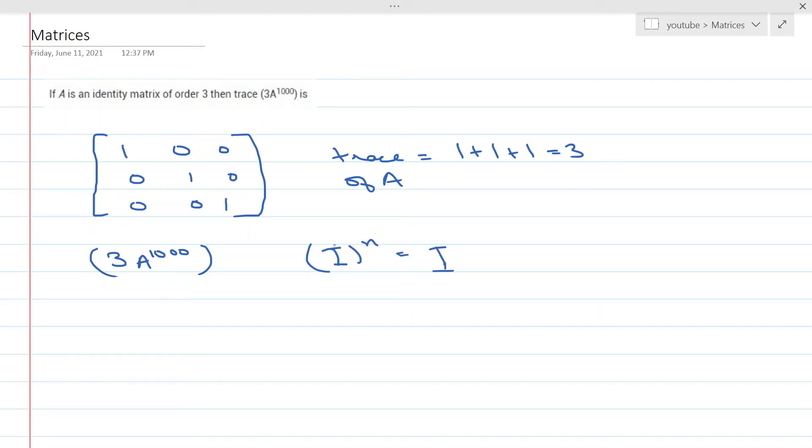So if A is an identity matrix, what does that mean? A power 1000 is going to be nothing but A, which is going to be the identity matrix.